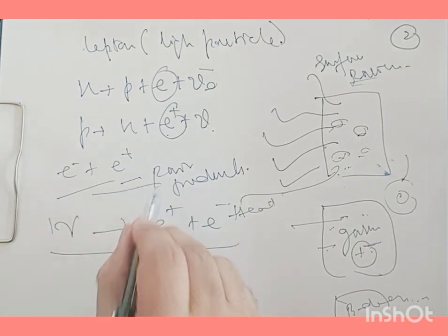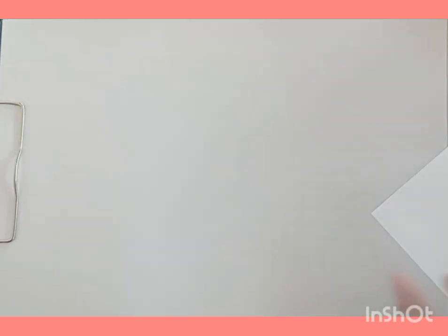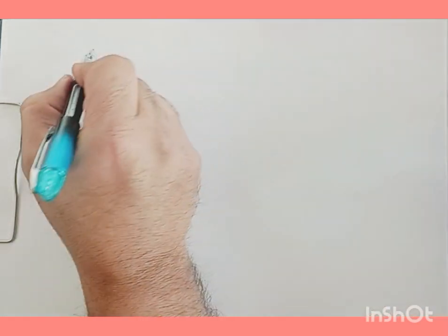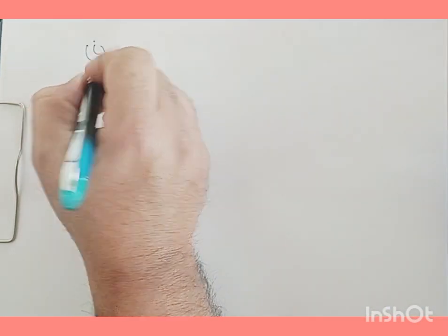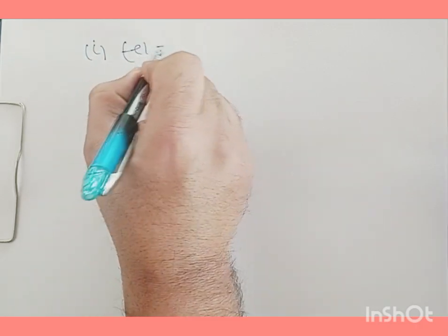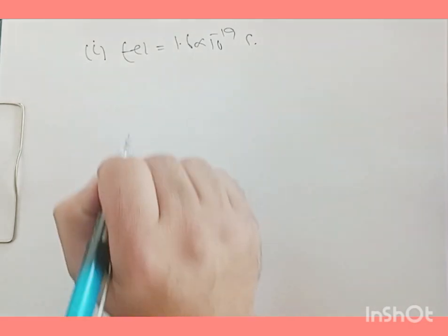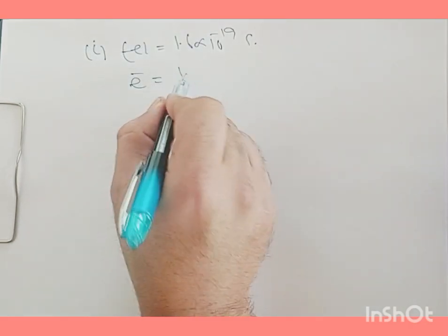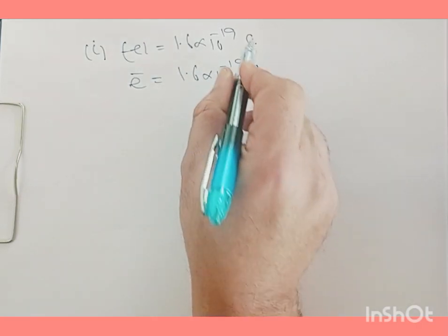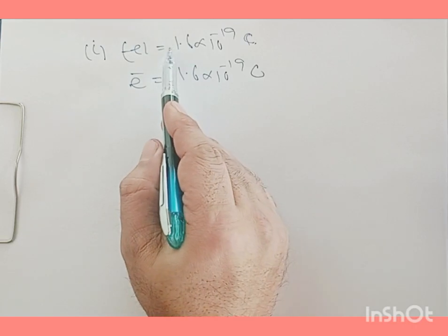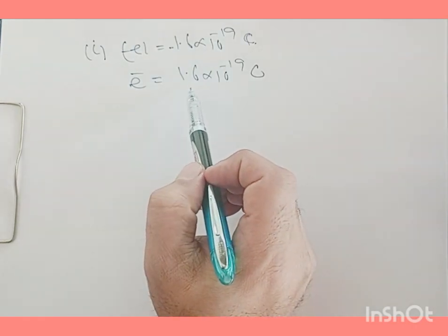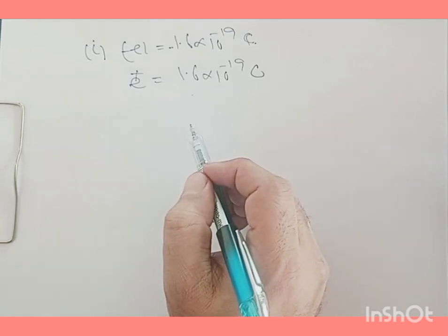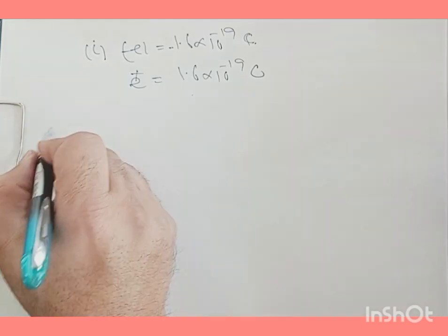Some fundamental properties of electrons: the electron is a negatively charged particle and its anti-particle is the positron. The magnitude of the electron's charge is 1.6 × 10⁻¹⁹ coulombs (negative), and the charge on the positron is +1.6 × 10⁻¹⁹ coulombs.